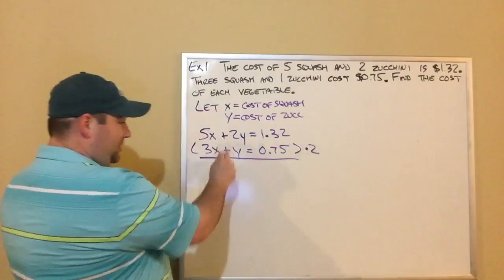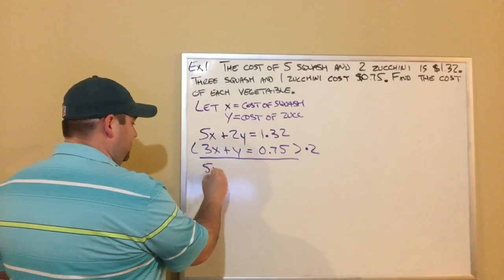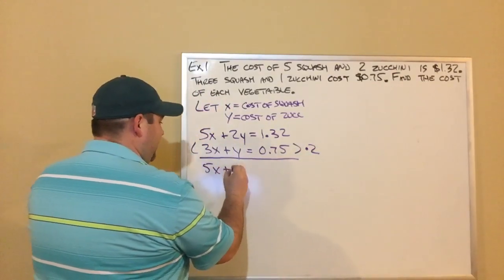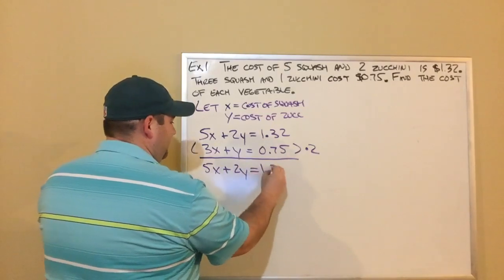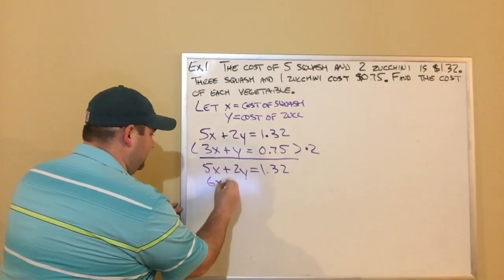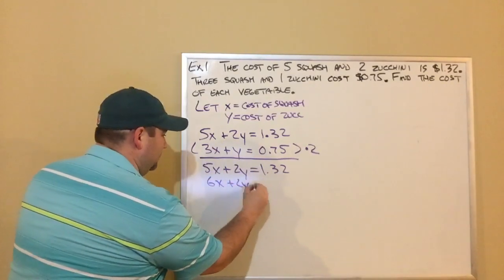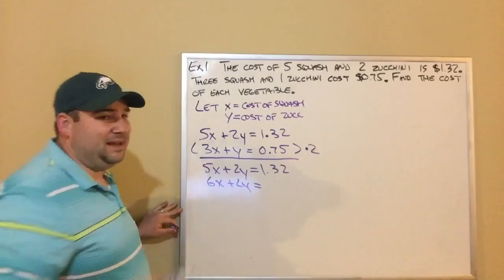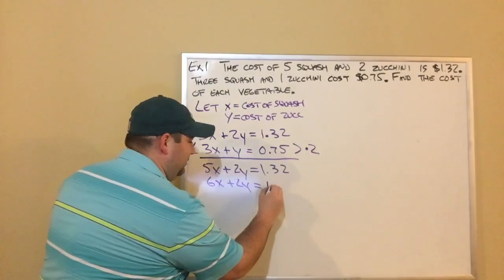So the first equation will stay the same. 5X plus 2Y equals $1.32. Our second equation, we're just going to multiply each term by two. So it'll be 6X plus 2Y equals 75 cents times two. Again, you've got a calculator. You can do that math, but it's $1.50.